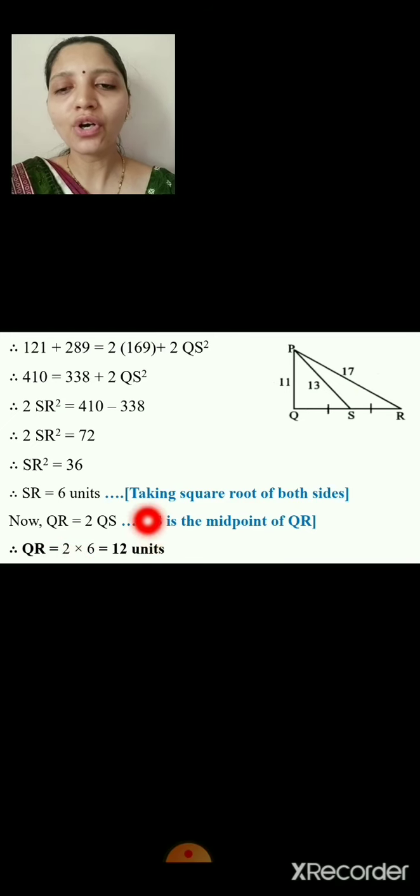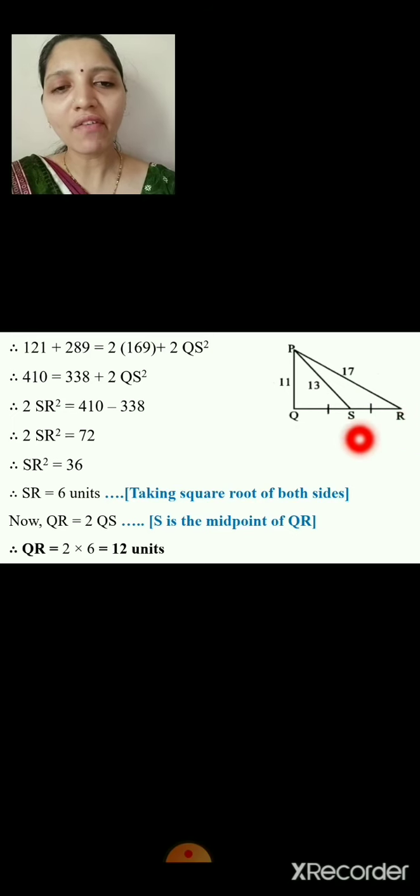Since S is the midpoint of segment QR, QR = 2·QS. Because QS = SR = 6, we get QR = 2 × 6 = 12 units. That is the final answer.